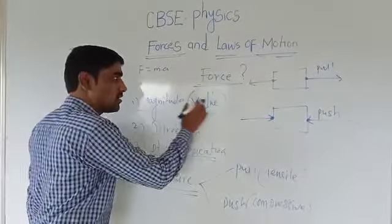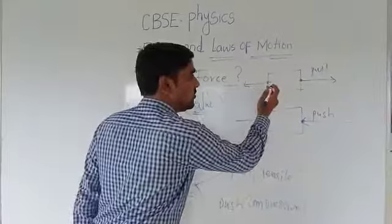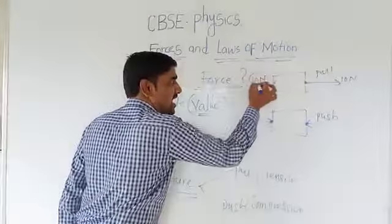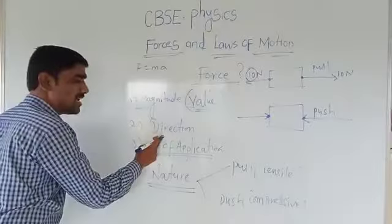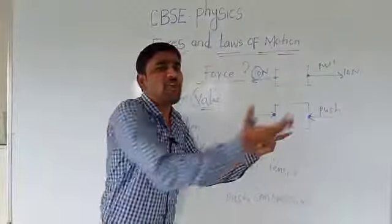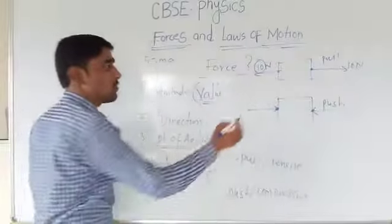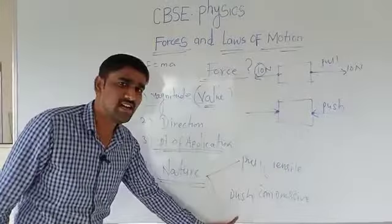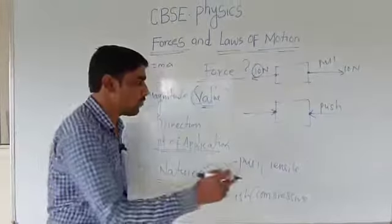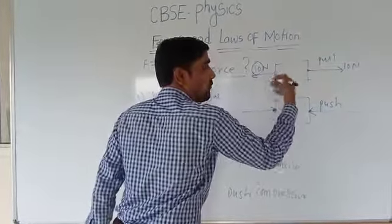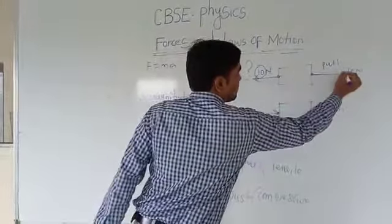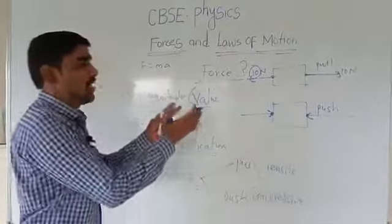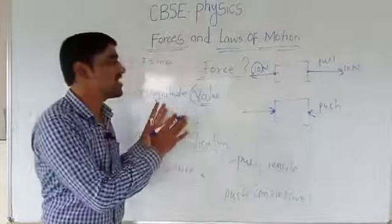What is meant by magnitude? Magnitude is nothing but the value of the force. Suppose you are applying 10 Newton — that quantity or magnitude of 10 is called the value or magnitude of that force. What about direction? Direction is simply the line of action of a force. What about the point of application? It is the point at which we apply the force. What about the nature? There are two types: pull and push. Pull is called tensile and push is called compressive. When the force is applied away from the point of application, shown by an arrow pointing away, it is called a pull force. When the force is applied towards the point, with the arrow pointing towards it, it is called a push force. These are the simple concepts related to force.